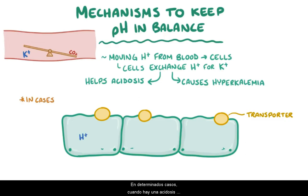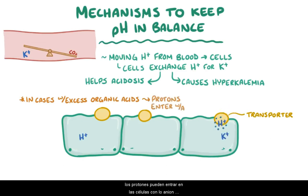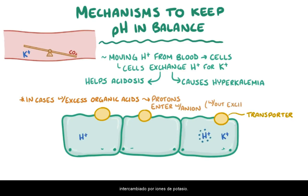In cases when there's a metabolic acidosis from excess organic acids, like lactic acids and keto acids, protons can enter cells with the organic anion, rather than having to be exchanged for potassium ions.